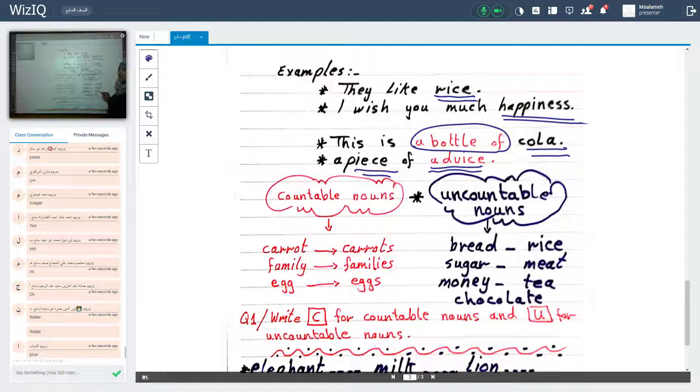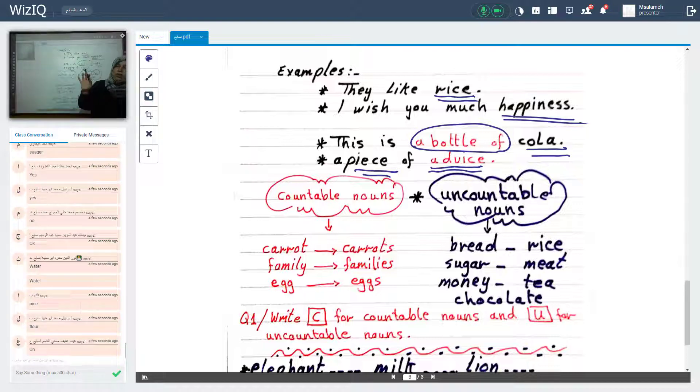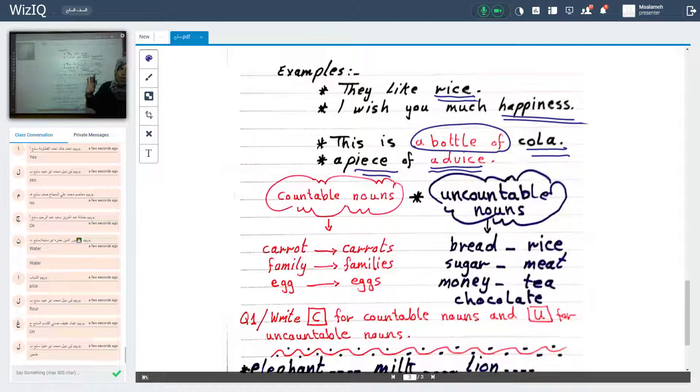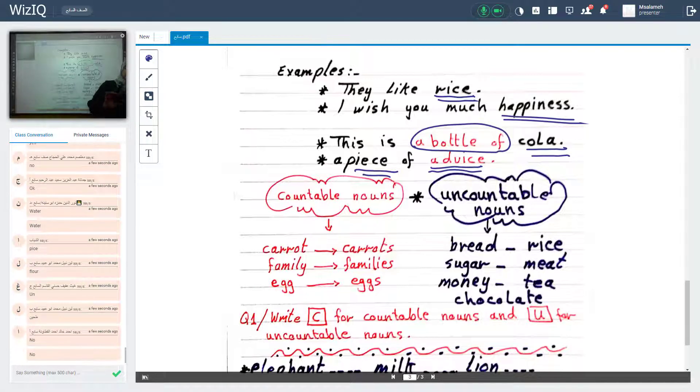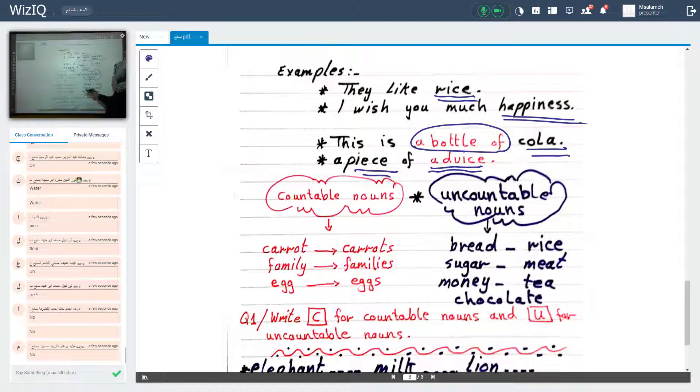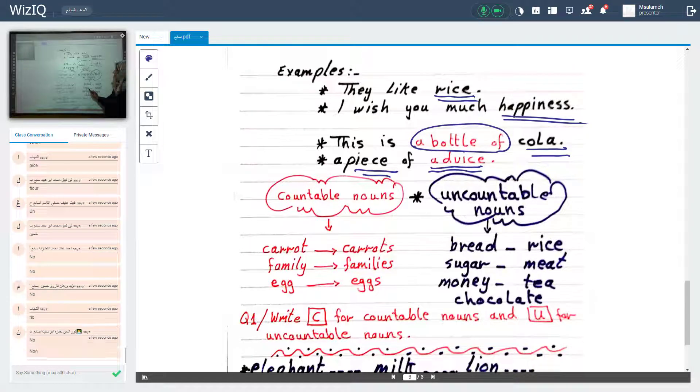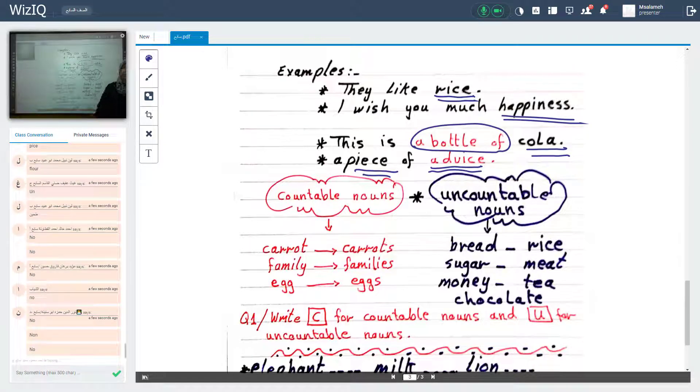A cup of tea. صارت countable. لكن الـ tea alone لحالها it's uncountable. Money. Uncountable. Can you count all the money in the world? No, I can't. ممكن أحكي لك I have ten dinars. Ten dinars. صارت محدود. يعني count. I count it. Money. Uncountable. Sugar. Uncountable. Kilo of sugar. صارت countable. Is it clear, my student?